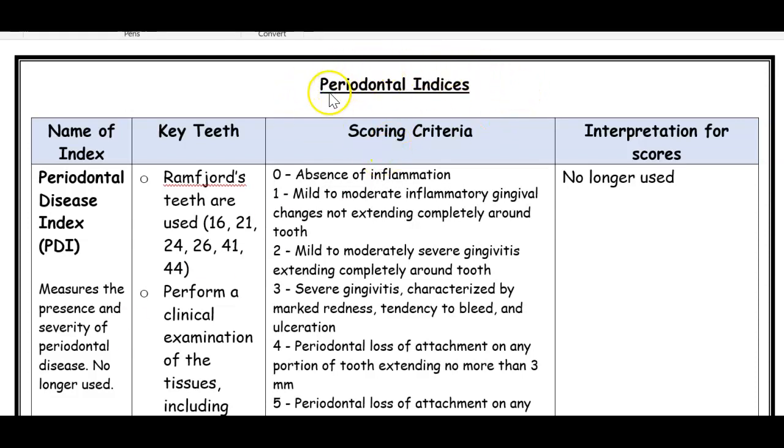Now we'll look at periodontal indices. We looked at plaque indices, we looked at gingival indices, and now we're looking at periodontal indices. There are two main ones I want to note. There are many others, but I'm just going to look at the two main ones.